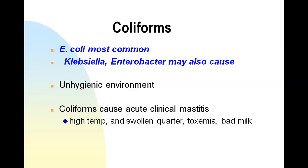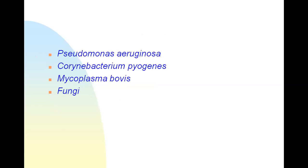The third important group is coliforms, the most important of which is E. coli. Coliforms cause mastitis mostly when the environment where the animal is kept is not clean. Other bacteria that sometimes cause mastitis include Pseudomonas aeruginosa, Corynebacterium pyogenes, and Mycoplasma bovis. Sometimes fungi and yeast can also cause mastitis.